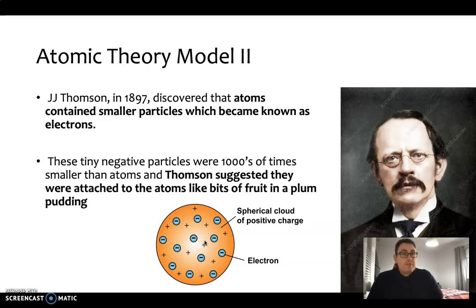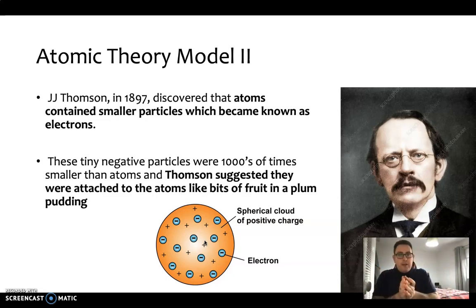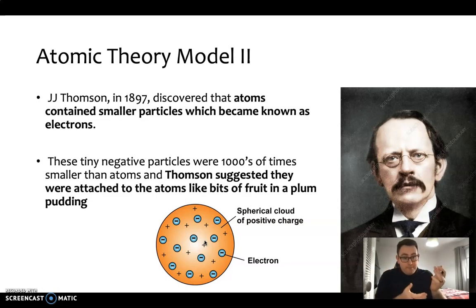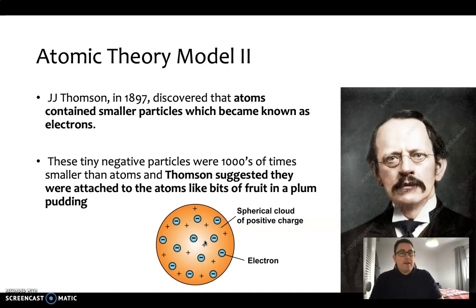JJ Thomson discovered that atoms actually contained even smaller particles within them, known as electrons. This model became known as the plum pudding model. You've got a big sphere representing the atom, and within that is a cloud that is completely positively charged. Within that cloud are tiny, negatively charged electrons — like the fruit in a plum pudding — scattered all over the place within this sphere of positive charge.